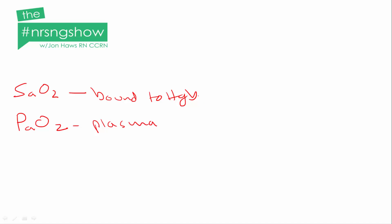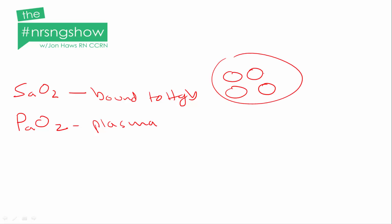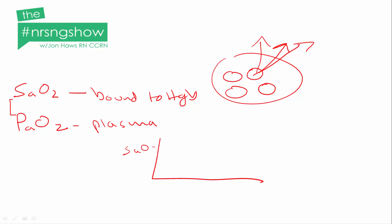Oxygen travels through the body in two ways: either bound to hemoglobin or in the plasma. As blood travels around the body, the hemoglobin is going to give up some of this oxygen to the tissues. We have a hemoglobin with four oxygens, and as it passes through the body it gives up some of that oxygen. These tissues need oxygen to complete ATP. We give up oxygen, allow tissues to do their metabolic processes, and the blood comes back to the heart to receive more oxygen. This relationship between SaO2 and PaO2 is known as the oxyhemoglobin dissociation curve, which shows how readily hemoglobin gives up oxygen.